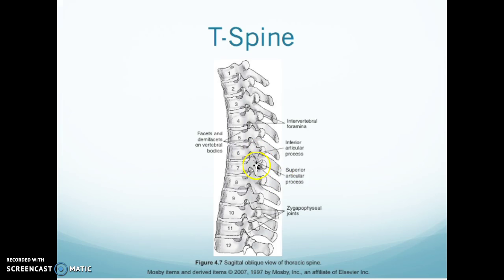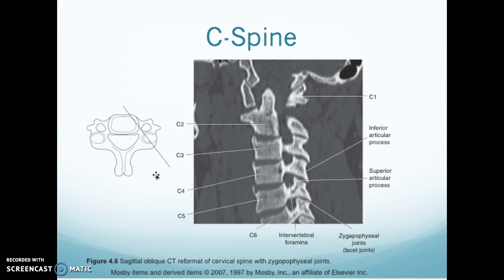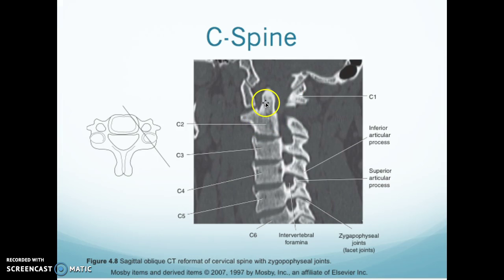This is a good animation for your intervertebral foramen with your inferior articular process and your superior articular process — your zygapophyseal joints — and you have your facets with your demi-facets on your vertebral bodies. This is an oblique CT of the C-spine coming at an angle, not a true sagittal plane. We do obliques when looking for degenerative disease. Here is C1, C2 with your dens sticking up, your inferior and superior articular processes, your zygapophyseal joint, and your intervertebral foramen.